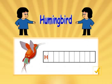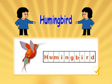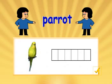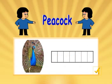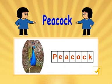Hummingbird. H, U, M, I, N, G, B, I, R, D. Hummingbird. Parrot. P, A, R, R, O, T. Parrot. Peacock. P, E, A, C, O, C, K. Peacock.